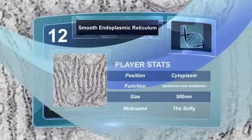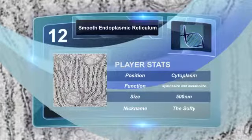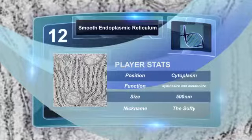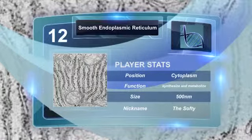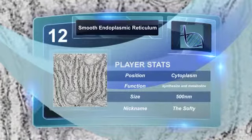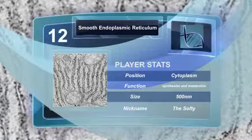The smooth endoplasmic reticulum is a eukaryotic organelle that is involved in the synthesis of lipids and steroids, the metabolism of carbohydrates, and the regulation of calcium concentration.